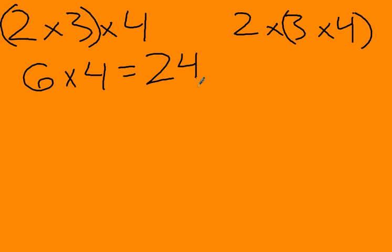Well, over here, I'm going to do what's inside these parentheses first. 3 times 4 is 12, 2 times 12, and again, I know that equals 24. It didn't matter where I put the parentheses and grouped the numbers.